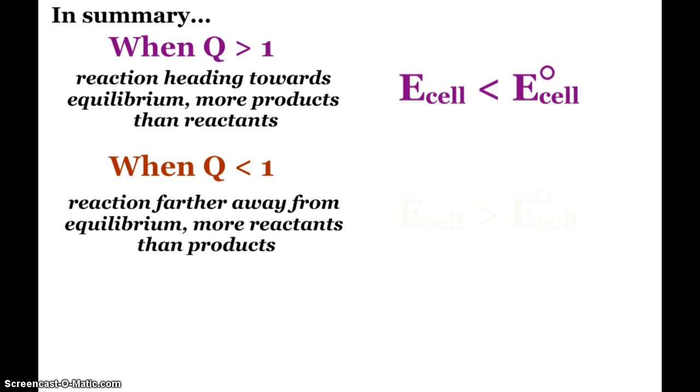And vice versa, when Q is less than 1, the reaction is farther away from said equilibrium. There are more reactants than our products. And so our cell voltage is greater than our E°_cell for those conditions.